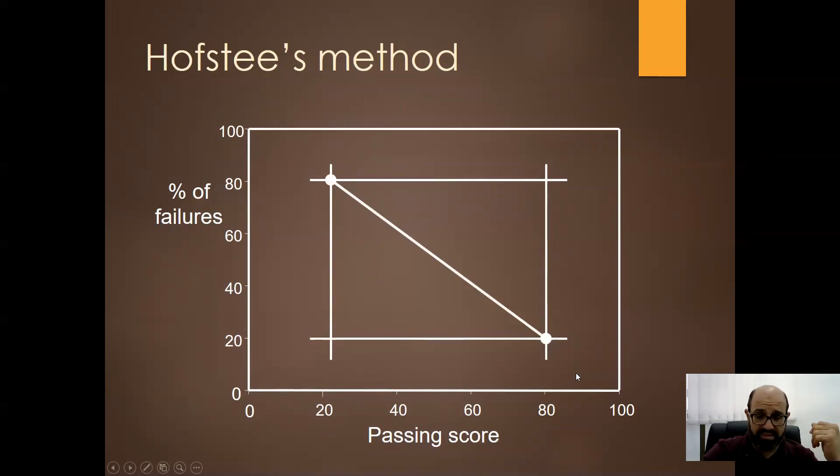We draw this diagonal line and then we plot the scores of the students. And the intersection is our pass mark. And it differs according to the performance of the student.